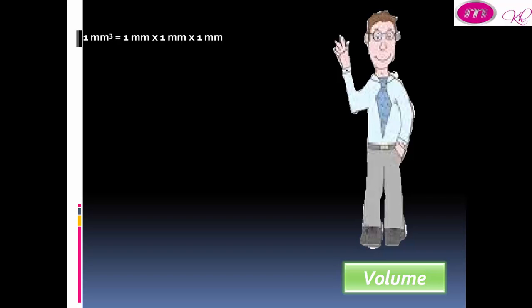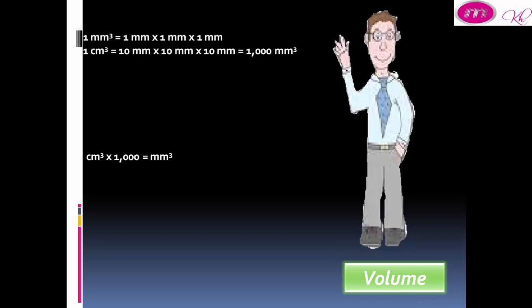One millimeter cube equals one millimeter by one millimeter by one millimeter. One centimeter cube equals ten millimeter by ten millimeter by ten millimeter, equal to one thousand millimeter cubed. When we change from centimeter cube to millimeter cube, we multiply by 1,000.